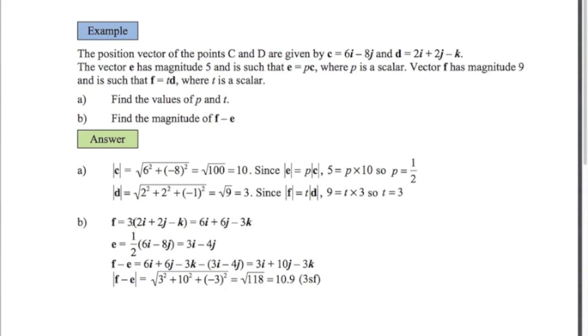So f is 3 times d, which is this vector here. E is a half of c, which is this vector here. So f minus e, we just subtract them. Gives us this vector here. Now you could write this in column form if you like. I'm just sticking with the original way the question was asked. But if you like you could write this as 3, 10, minus 3 just going down in a column.